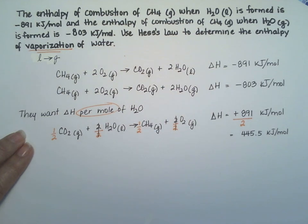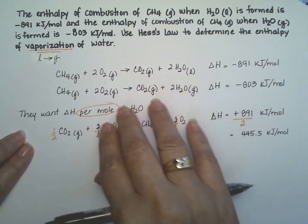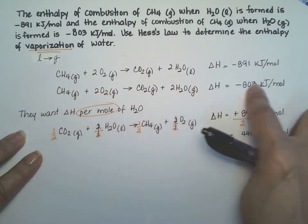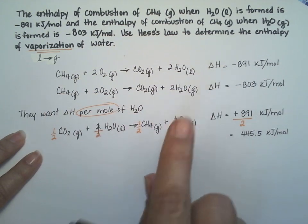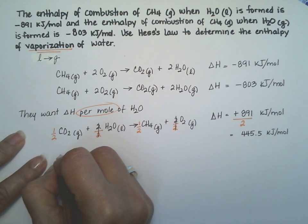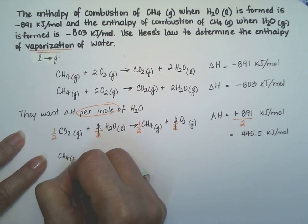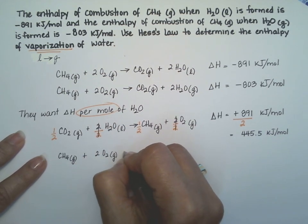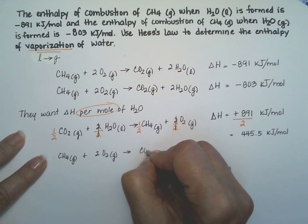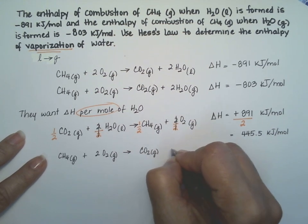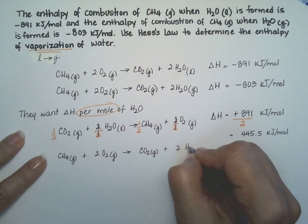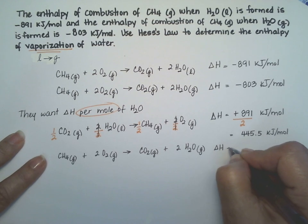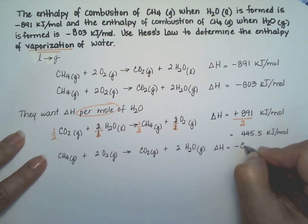Let's go for the second equation. The second equation, I want it just the way it is because I want water as the product. So let's go ahead and write it down and then we divide by two for the exact same reasons. So methane gas plus 2O2 forming CO2 gas and two moles of water gas.